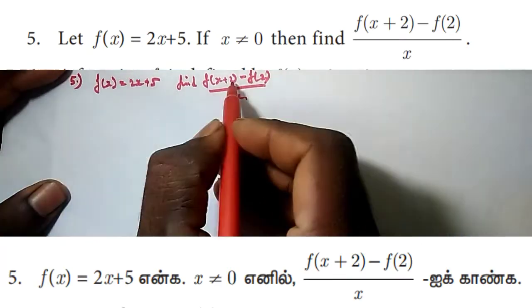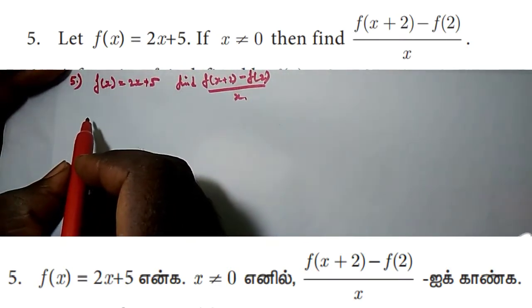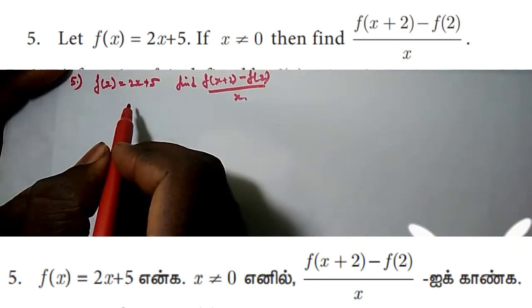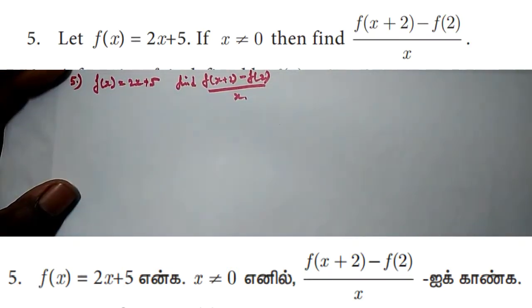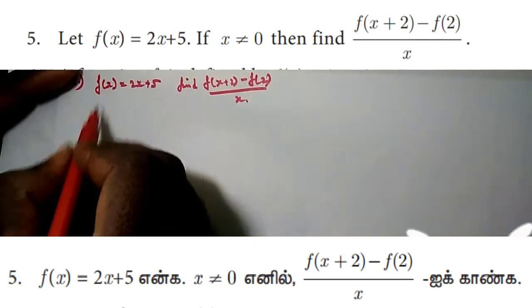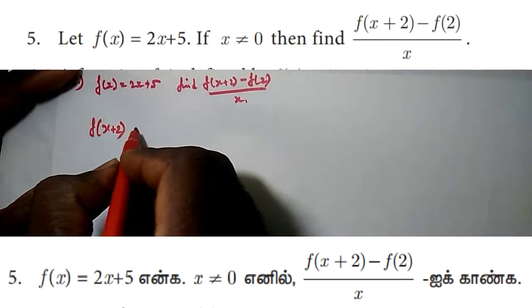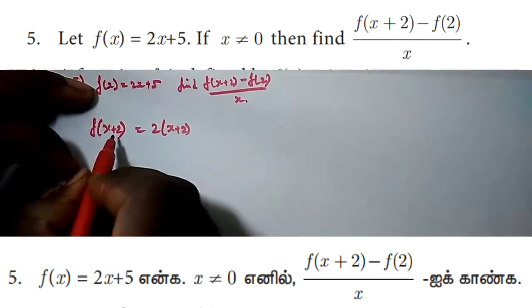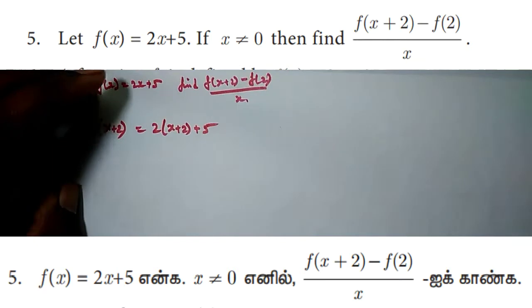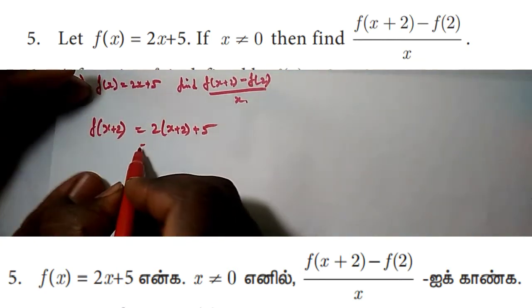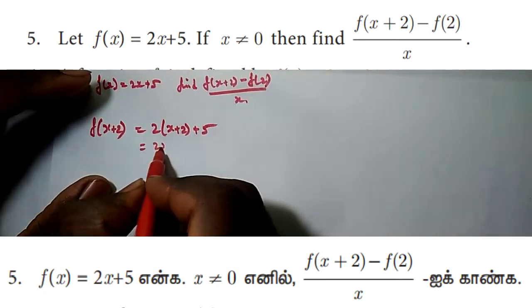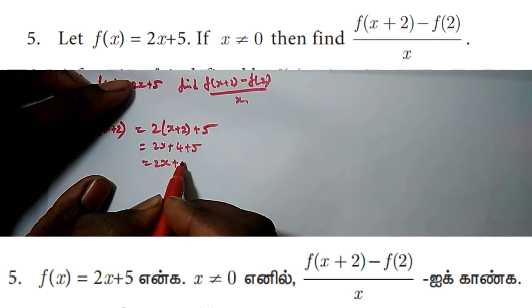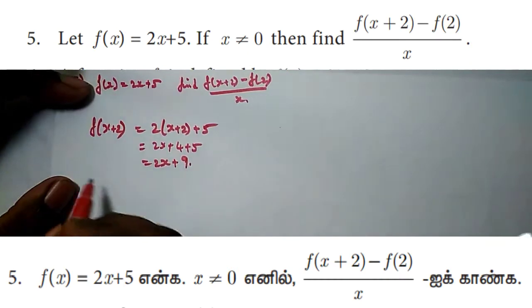First, find f(x+2). Substitute x+2 into f(x): f(x+2) = 2(x+2) + 5 = 2x + 4 + 5, so f(x+2) = 2x + 9.